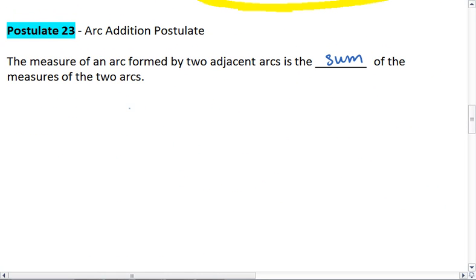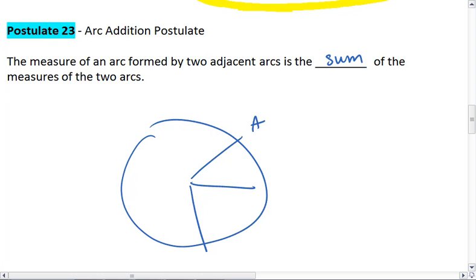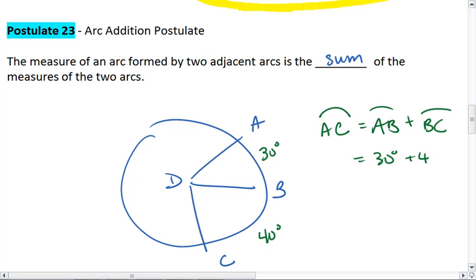Now that we have the arc addition postulate, which tells us that in a circle with two adjacent arcs—let's say this is 30 degrees and this is 40 degrees—we know that arc AC, which equals arc AB plus arc BC, is going to equal 30 plus 40, which will be 70 degrees.